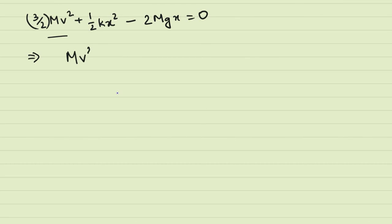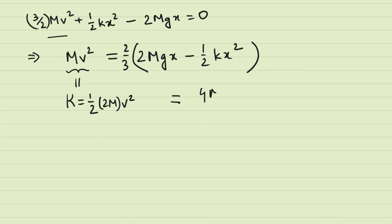So if we multiply everyone by 2 by 3, we have mv squared, which is the kinetic energy of the large mass. So for the large mass, we had half into twice mv squared, which is just mv squared. So that will be equal to 2mgx minus half kx squared, and we have to multiply that by 2 divided by 3.